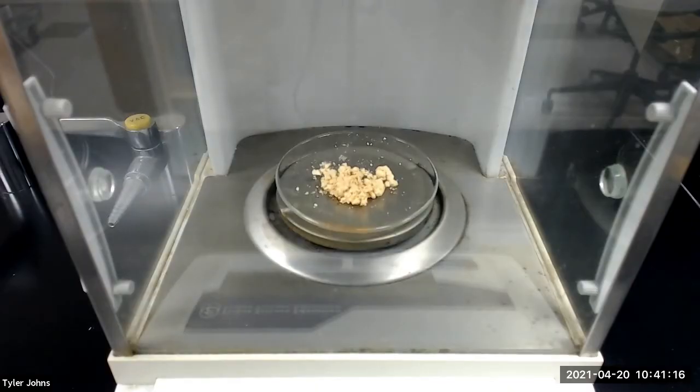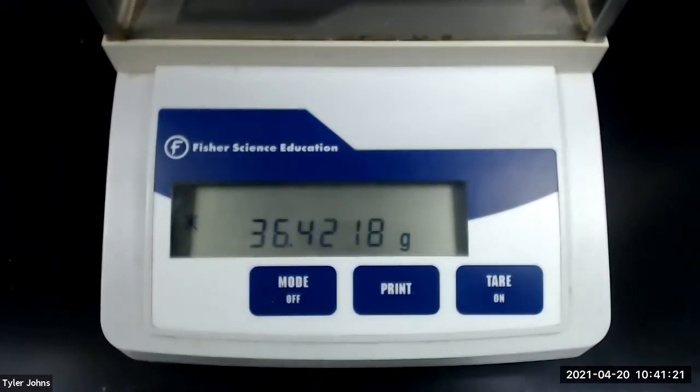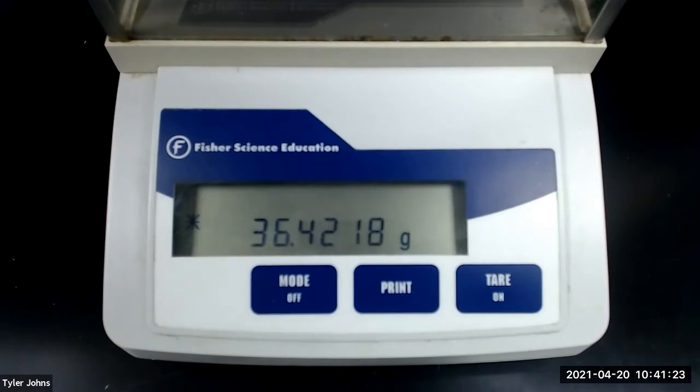After drying, the mass of the substituted chalcone product is 36.4218 grams.